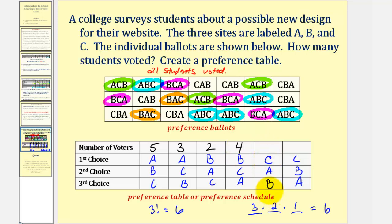Now we'll look for C, A, B. There's one, two, three, so a total of three. Which leaves one, two, three, four that voted for C, B, A. And now to make sure we didn't miss any, let's go ahead and find this sum to make sure the sum is twenty-one. So we have five plus three plus two, that's ten, plus four, plus three, plus four, which is twenty-one. So again, these are the preference ballots, and this is the preference table. Based upon the voting method, we would normally use this preference table to gather the information needed to select the winner.